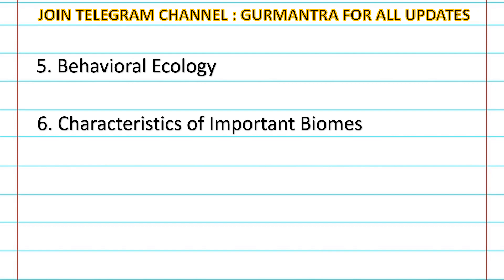Next, let's move on to behavioral ecology, which is very important — this will also be unit 11. Different types of behavior will give you a lot of questions. Altruism has a lot of questions. Hamilton's rule is always asked. Mating behavior is always asked. Predator-prey relationship also comes under population ecology and interactions, and that is also important.